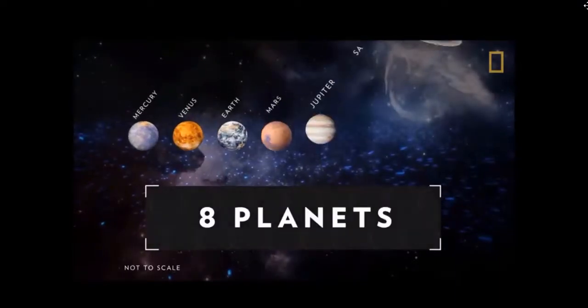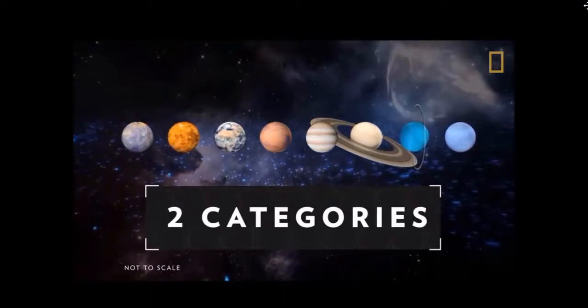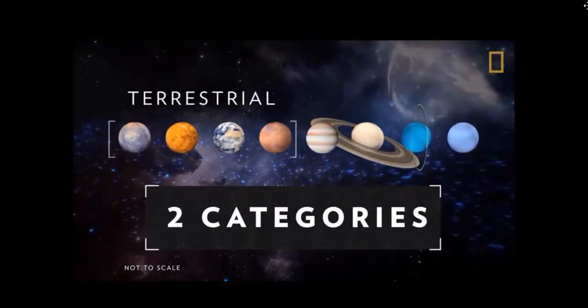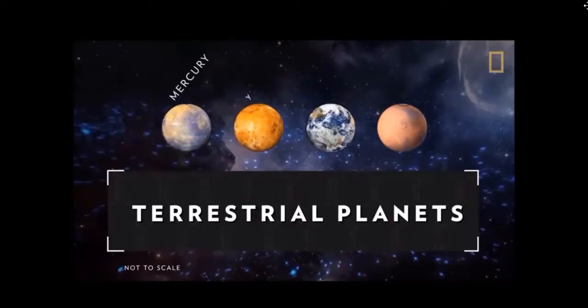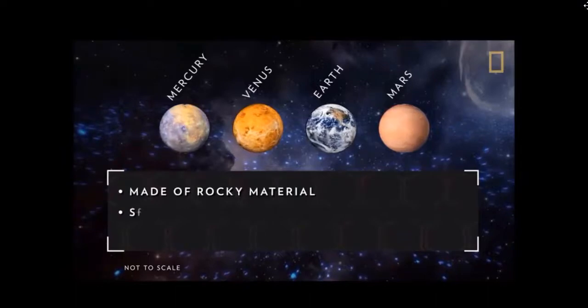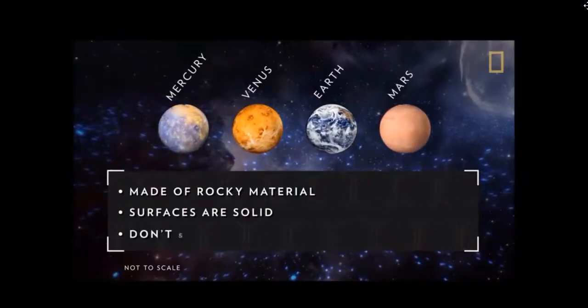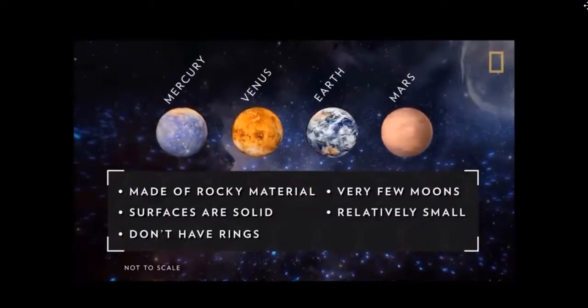Revolving around the Sun are 8 planets. These planets are divided into 2 categories based on composition: terrestrial and jovian. Terrestrial planets include Mercury, Venus, Earth, and Mars. They are primarily made up of rocky material, their surfaces are solid, they do not have ring systems, have very few or no moons, and they are small.